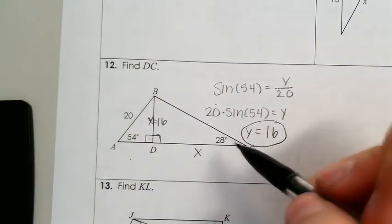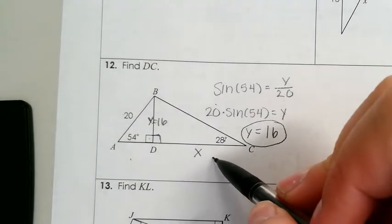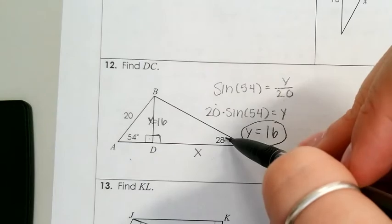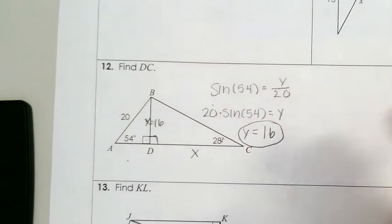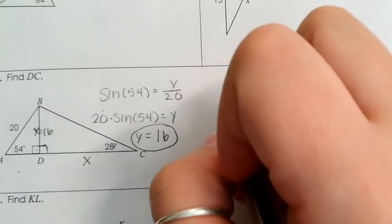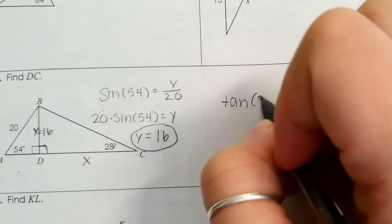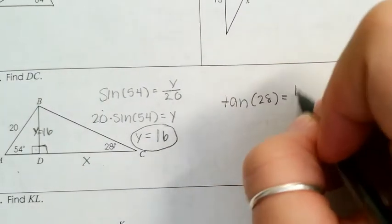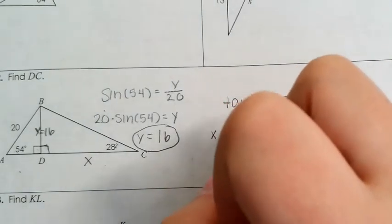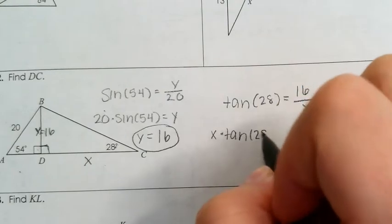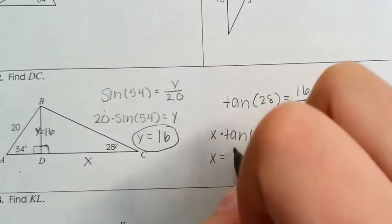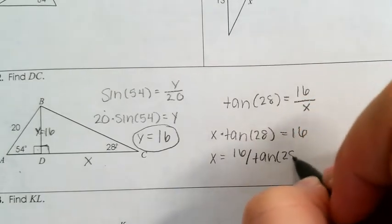Now we can come back to this triangle to solve for GC. Looking at this angle, we have opposite over adjacent, so we use tangent. Tangent of 28 degrees equals 16 over X. X times tangent of 28 is equal to 16, so X is equal to 16 divided by tangent of 28.